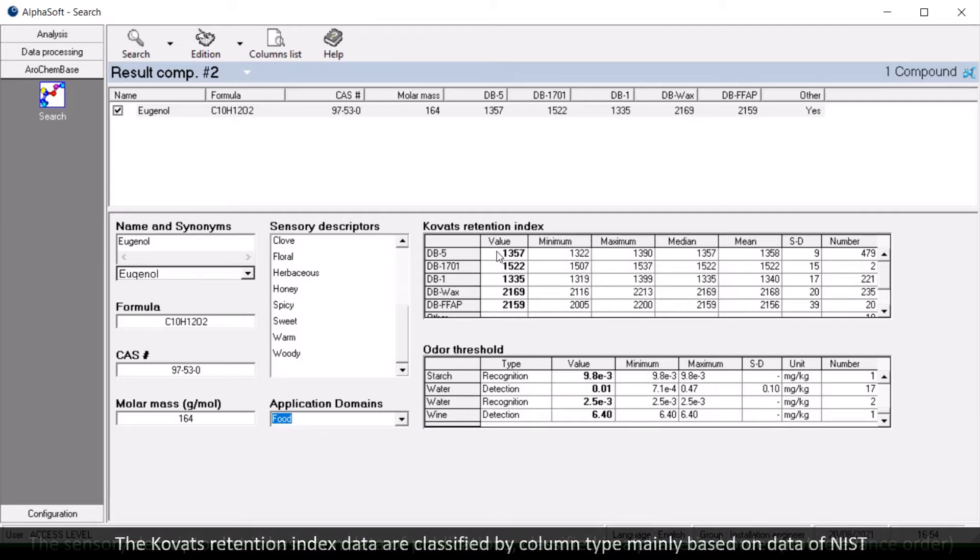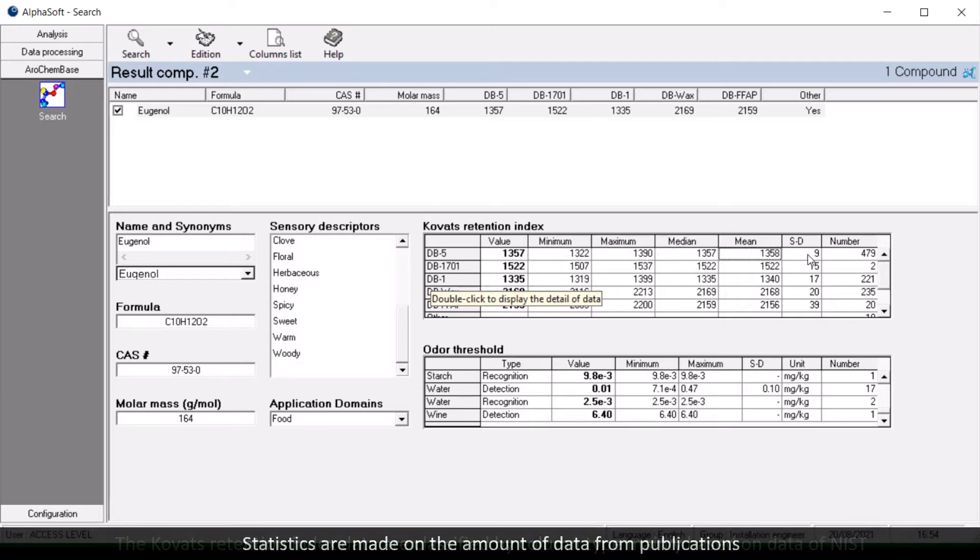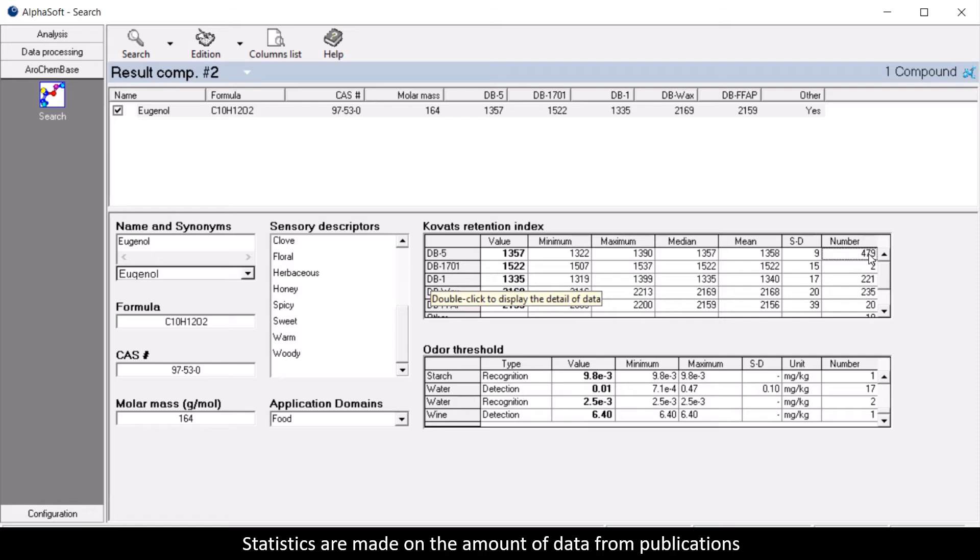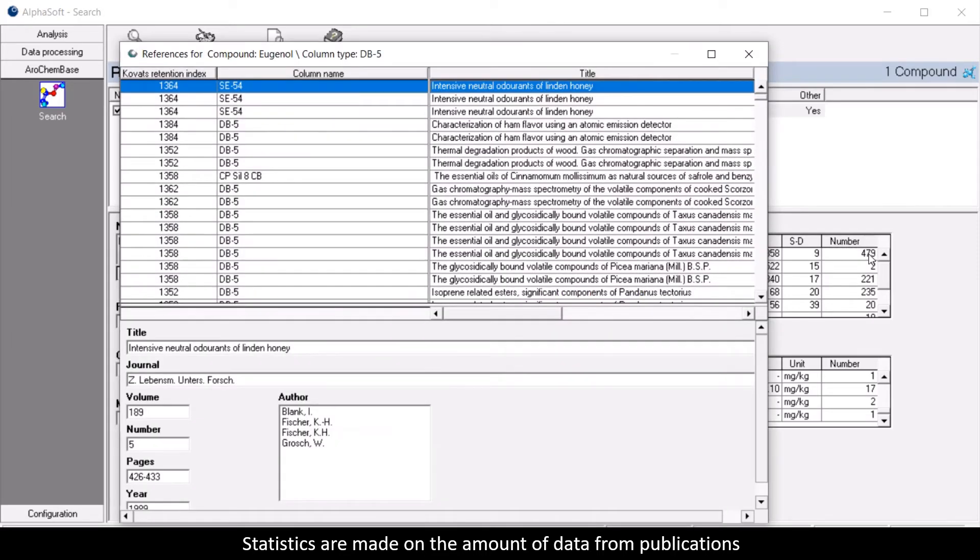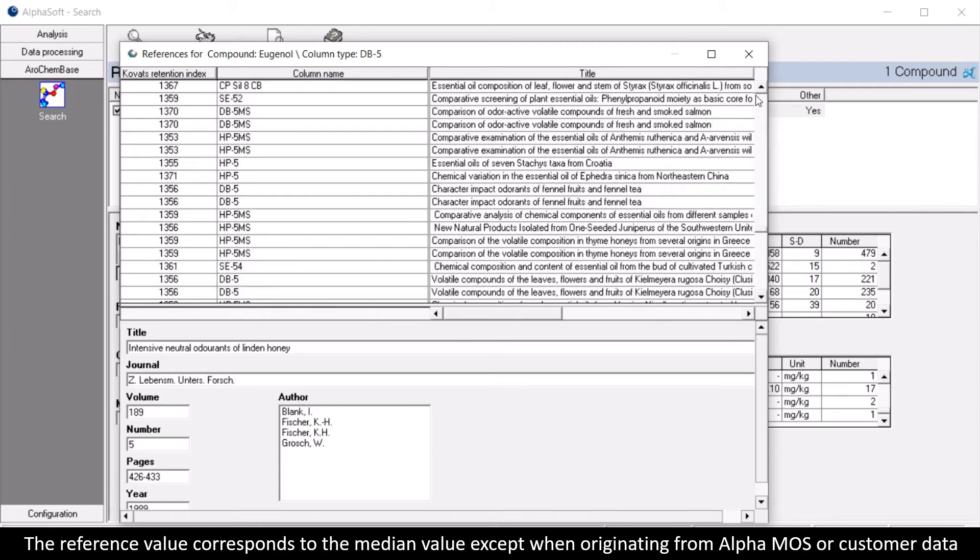The Kovats retention index data are classified by column type, mainly based on data from NIST. Statistics are made on the amount of data from publications. The reference value corresponds to the median value except when originating from Alpha MOS or customer data.